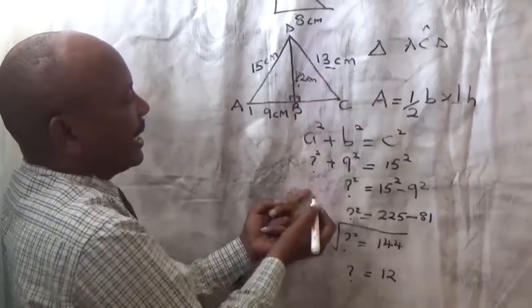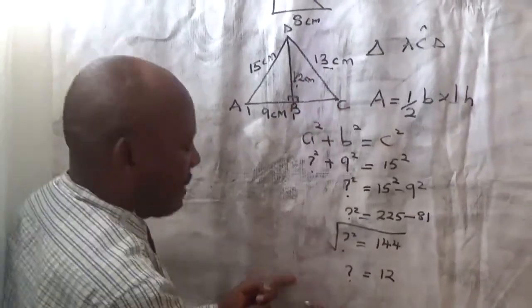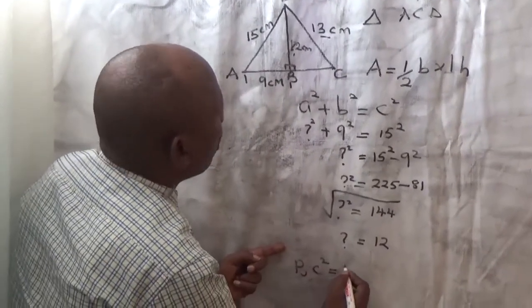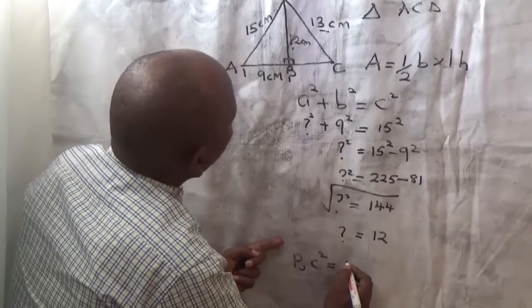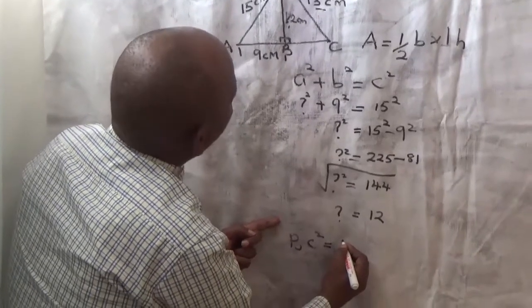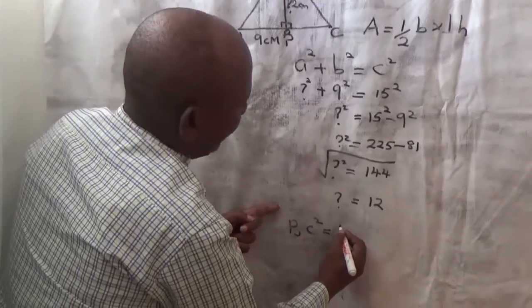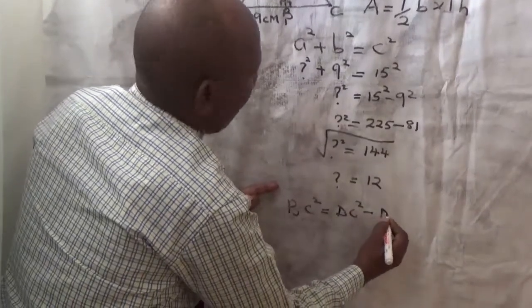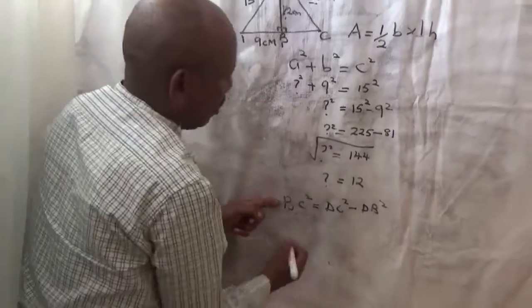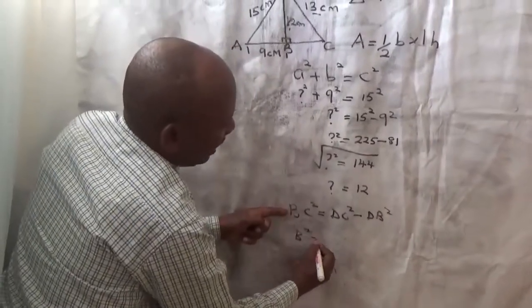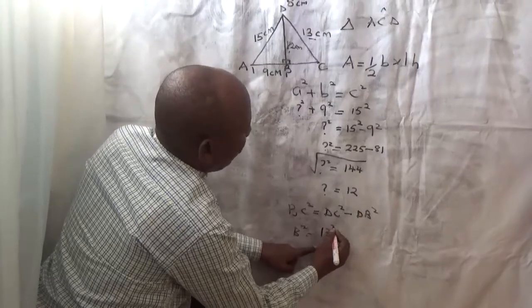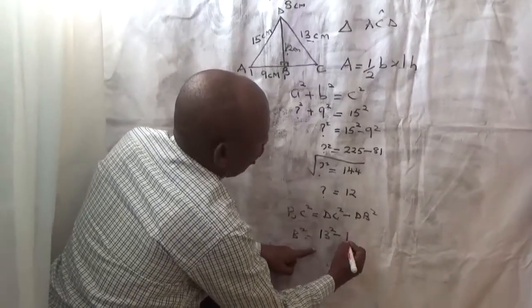With now 12 and 13, we can get BC, since BC squared again, should equal to, should equal to, DC squared minus DB squared. So, DC squared is equal to, DC squared, which is 13 squared, minus 12 squared.